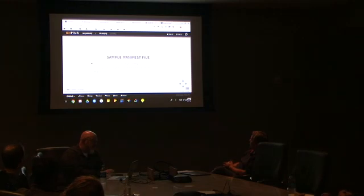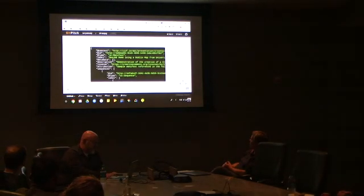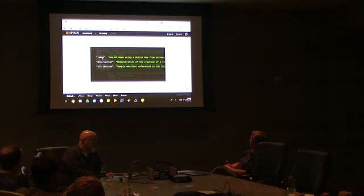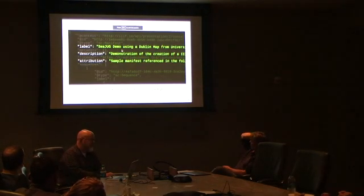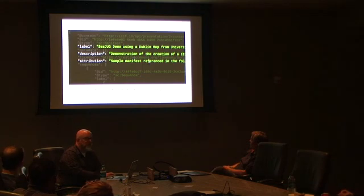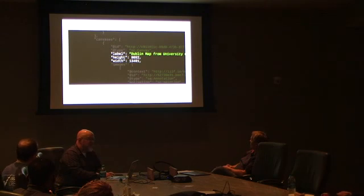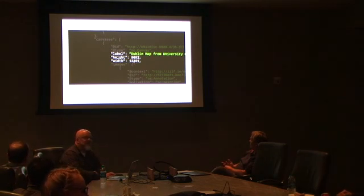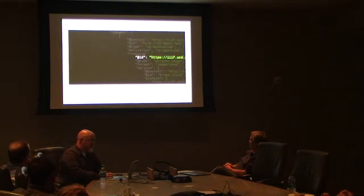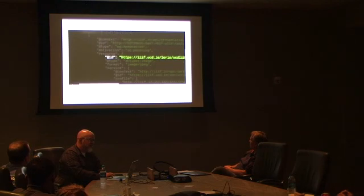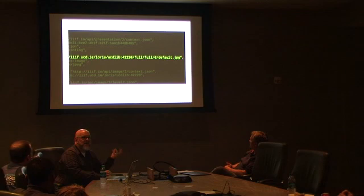I'll send a link to the repository where I've got this presentation and all associated code, including a sample manifest file. Here's a manifest — I've put some context related to our presentation: a CJUG demo using a Dublin map from University College Dublin, a description, and attribution linking back to this presentation. There's a label for the image, some properties (height and width), and a path to the actual image resource — you'll recognize that Image API formatted URL.